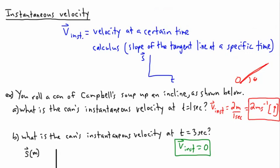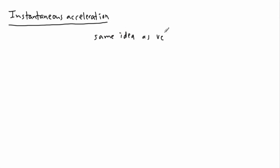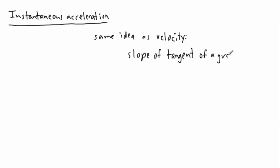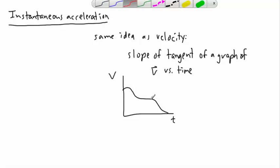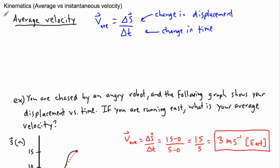Last but not least, instantaneous acceleration works the same way as instantaneous velocity, but this time you take the slope of the tangent line of a velocity versus time graph. For example, given a velocity-time graph with some curved shape, you pick a point, draw the tangent line, and find its slope. That gives you instantaneous acceleration — the same method applies for instantaneous velocity, instantaneous acceleration, or average velocity.